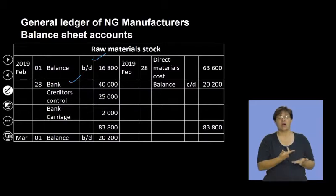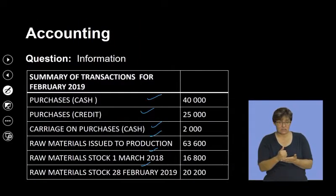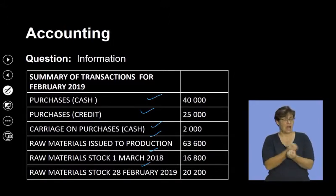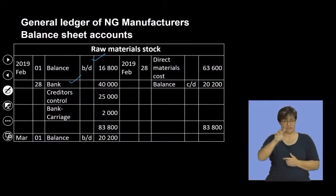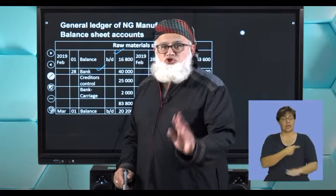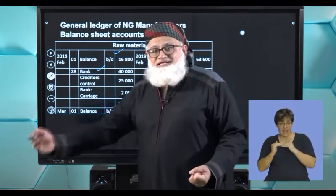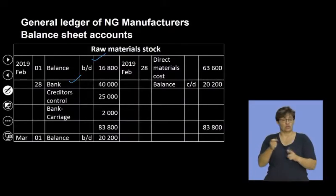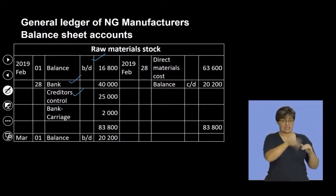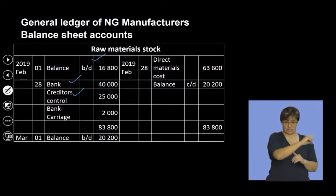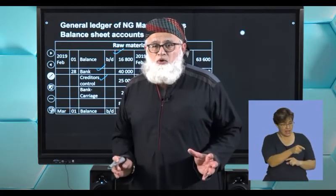Did we buy goods on credit? Yes, we bought materials on credit for 25,000. The contra entry is a debit to raw material stock — assets increasing in value — and a credit to creditors control. So there is the debit to my raw material stock of 25,000 rand. We had a stock of raw materials of 16,800 at the beginning, purchased for cash 40,000, and on credit 25,000.